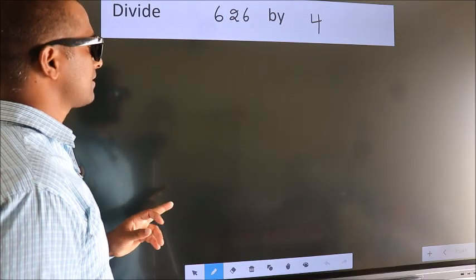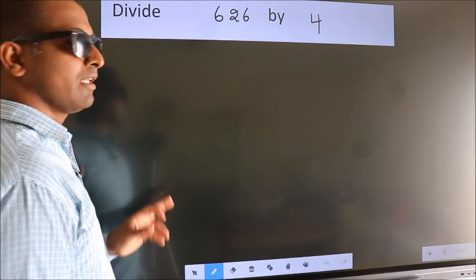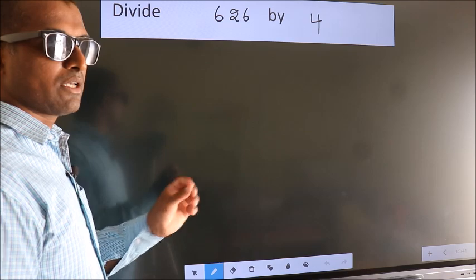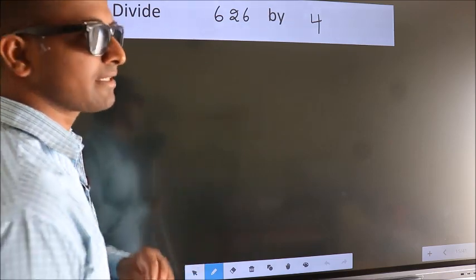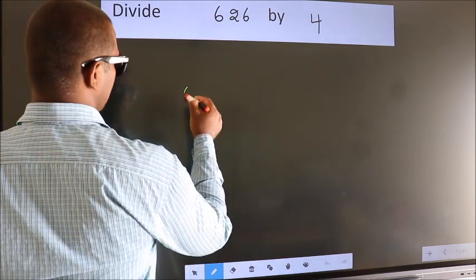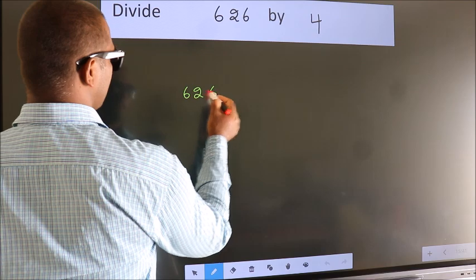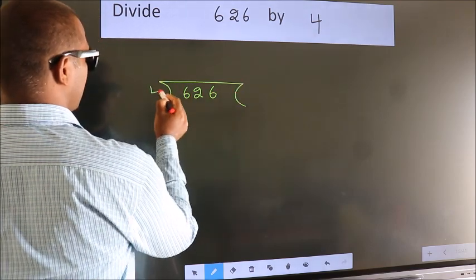Divide 626 by 4. To do this division, we should frame it in this way. 626 here, 4 here.